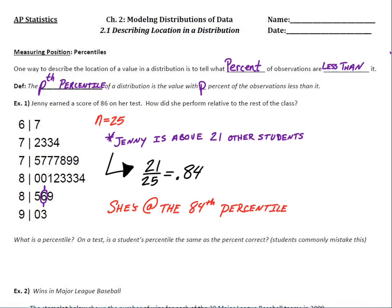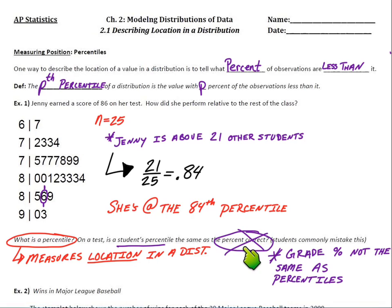So down here in italics, what is a percentile, really? It measures the location. So it measures the location of an individual in distribution. That's all it does. So it measures where you're at, your location, in the distribution. And then the next part there, on a test, is a student's percentile the same as the percent correct? Students commonly mistake that. No, it's absolutely not the same as the percent you got correct. Okay, let's clarify that right now. So that's not true. It's not the same as your percent correct. Your grade percent is not the same as percentiles. Percentiles are totally different. Percentiles is your location in the distribution. Like, for example, the percentage of people just below you on that test.